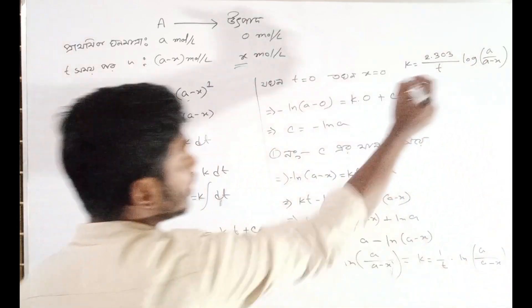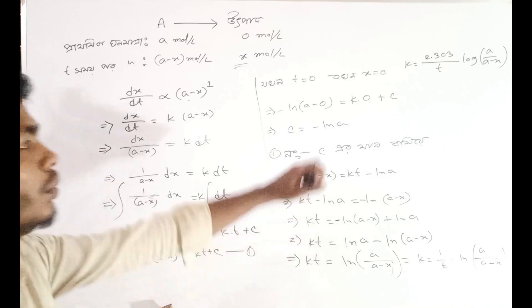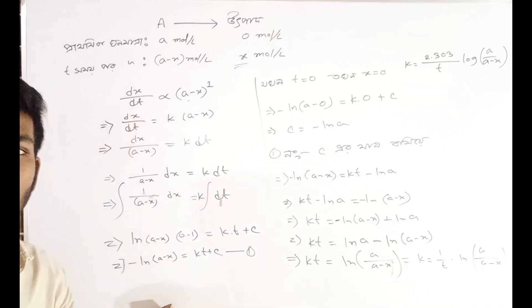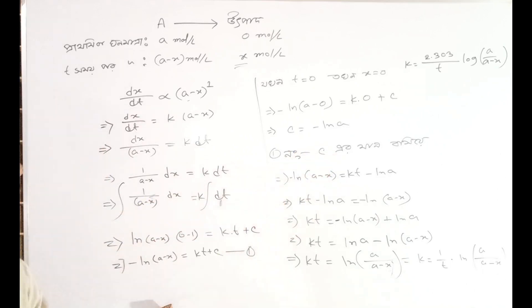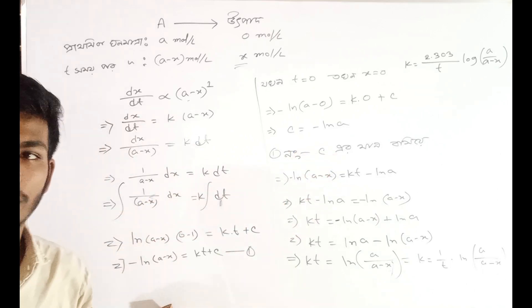So this is the first-order rate equation. This is the first one — the second form using log base 10.